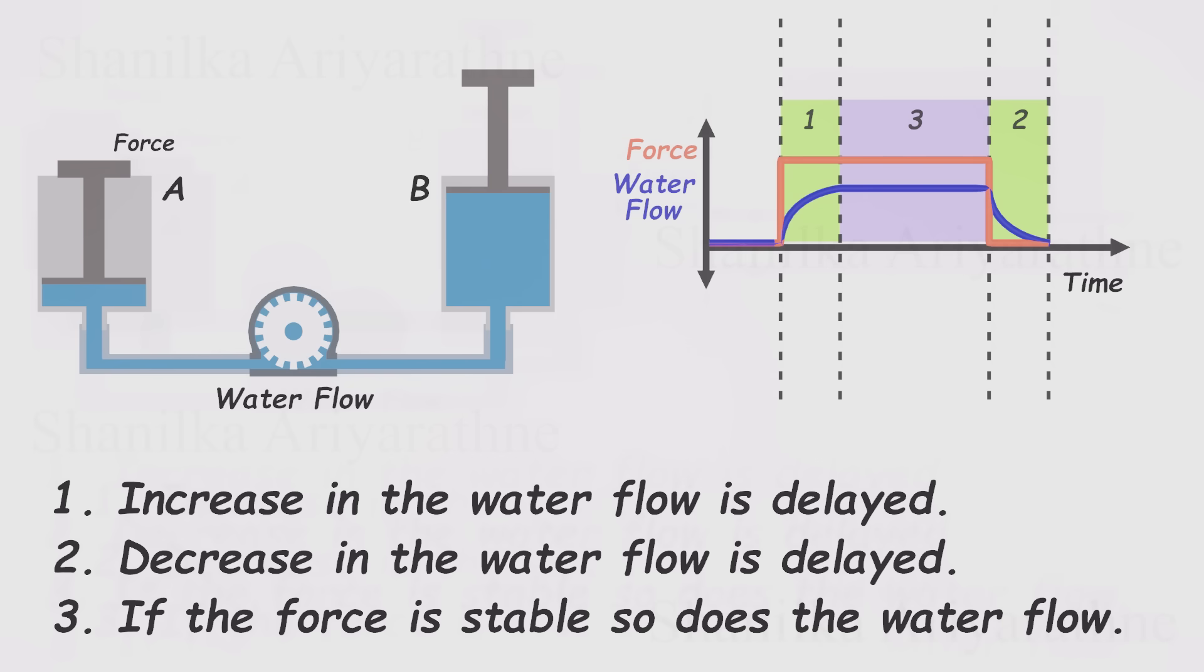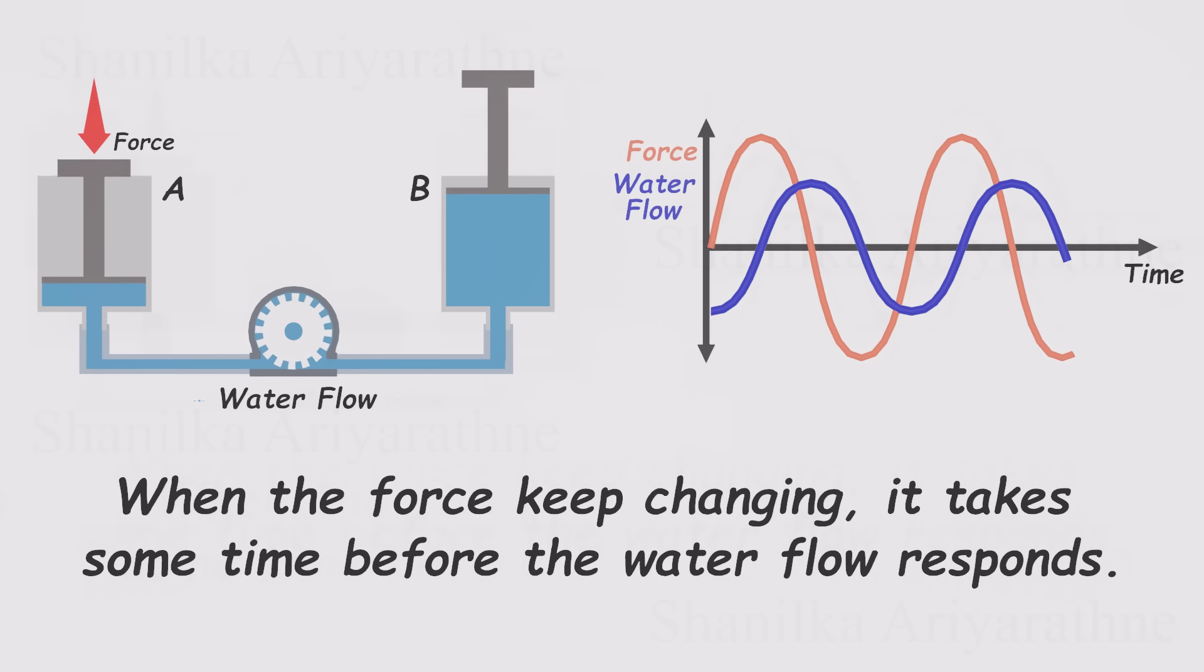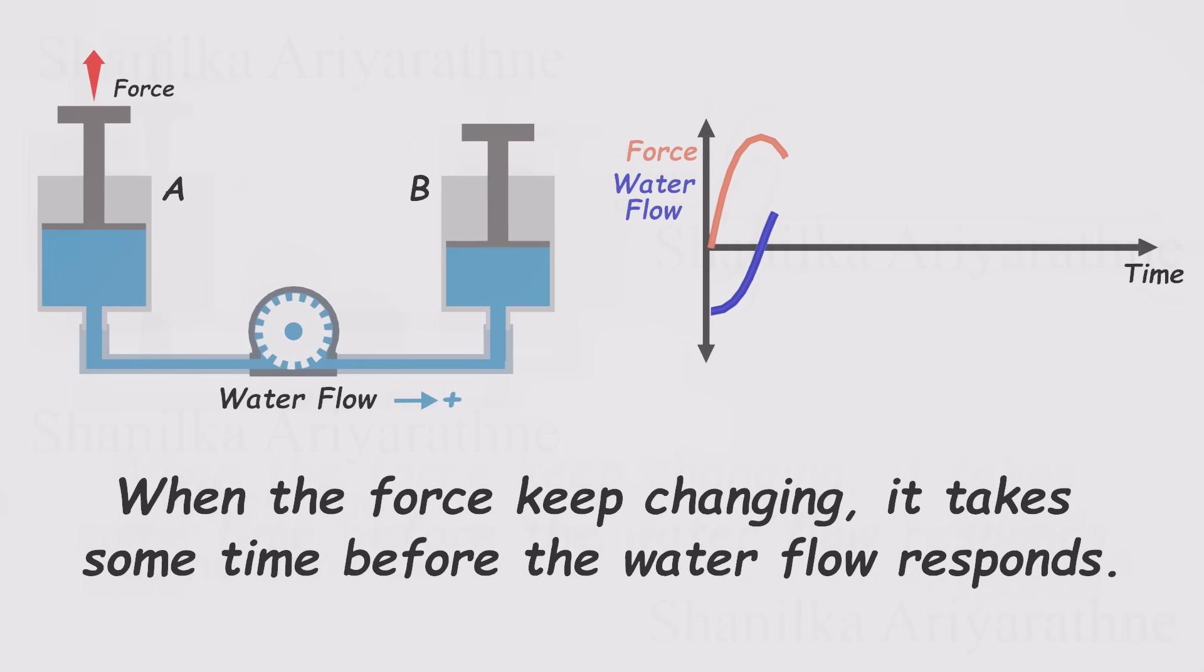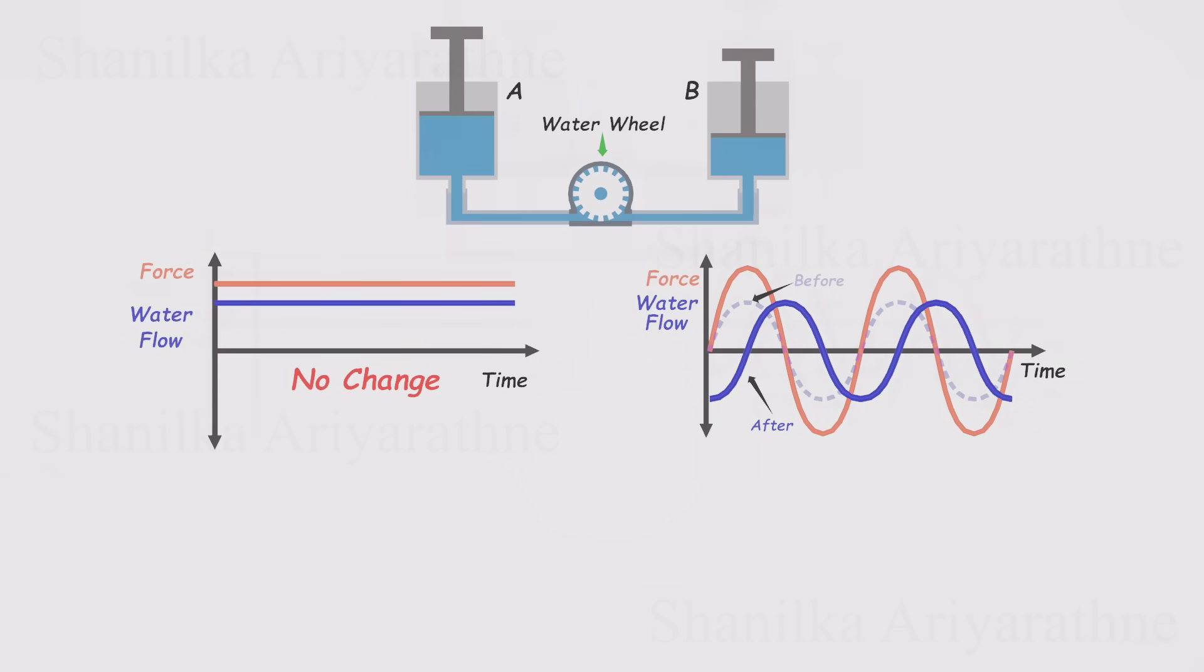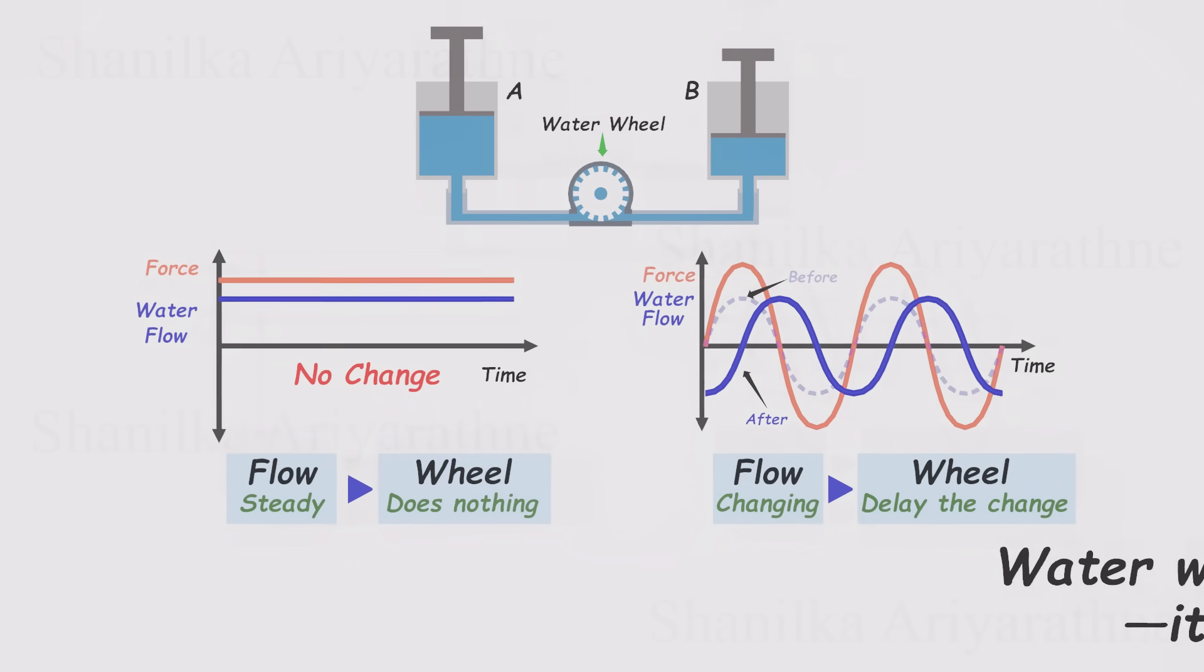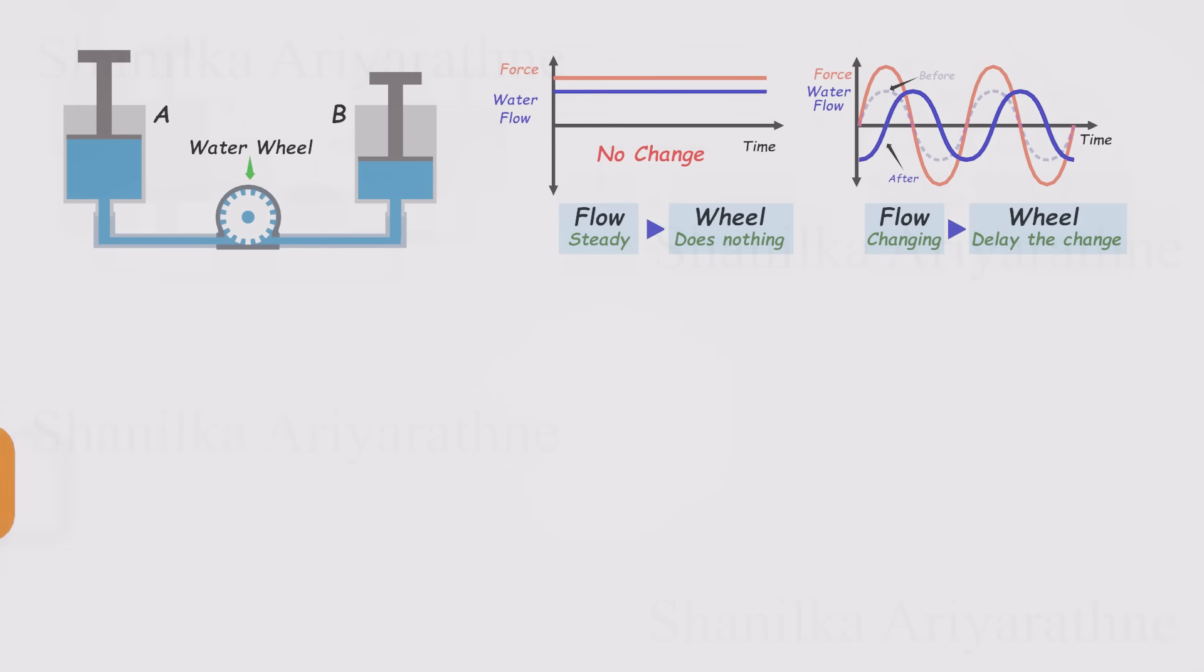Now, let's try changing the force on the piston continuously, pushing and pulling it back and forth. You'll notice that the water flow doesn't respond instantly. Just like before, the wheel resists sudden shifts in flow. Even when the force changes smoothly, the flow still takes a little time to catch up. The result? The water flow always lags behind the force. So we can sum up all the behaviors of the water wheel like this. When the flow is steady, the wheel does nothing at all. But the moment the flow tries to change, the wheel pushes back, delaying that change. That means the water wheel doesn't resist the flow itself. It only resists changes in the flow.